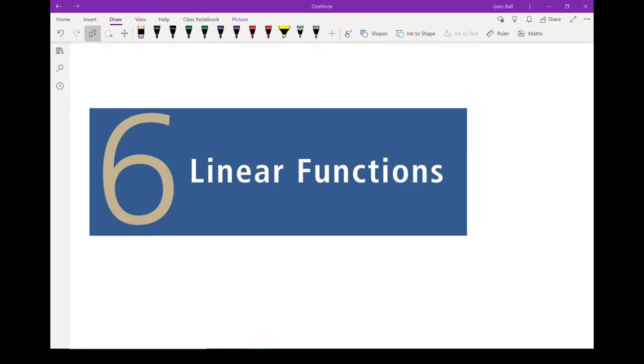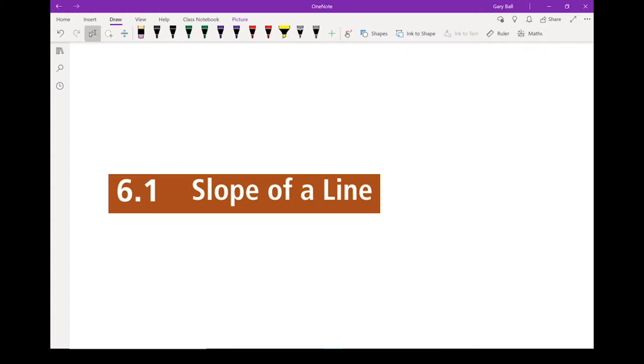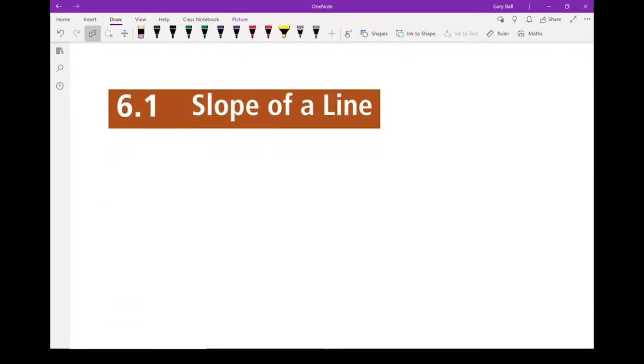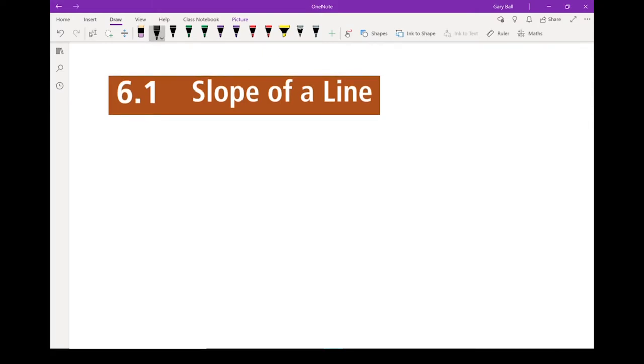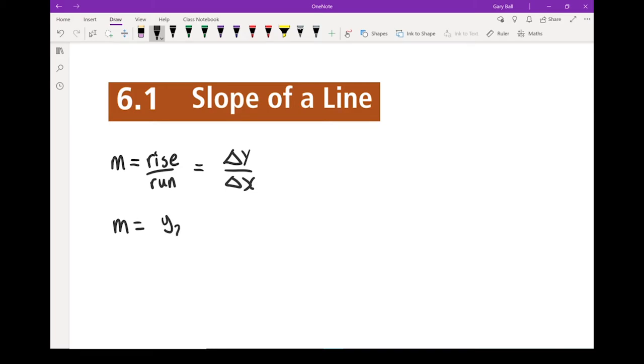Chapter six, linear functions. Let's start this off with 6.1, slope of a line. Now we've worked with slope some before, and we're going to continue working on it quite heavily in this chapter, especially in this section. Remember, the letter for slope we use m, and basically slope is rise over run. We can write that lots of different ways. We can say delta y over delta x, so how much the y changes compared to how much the x changes. There's another formula you're going to use quite a bit, m equals y2 minus y1 over x2 minus x1. Let's go through this section and get some practice working with slope of a line.